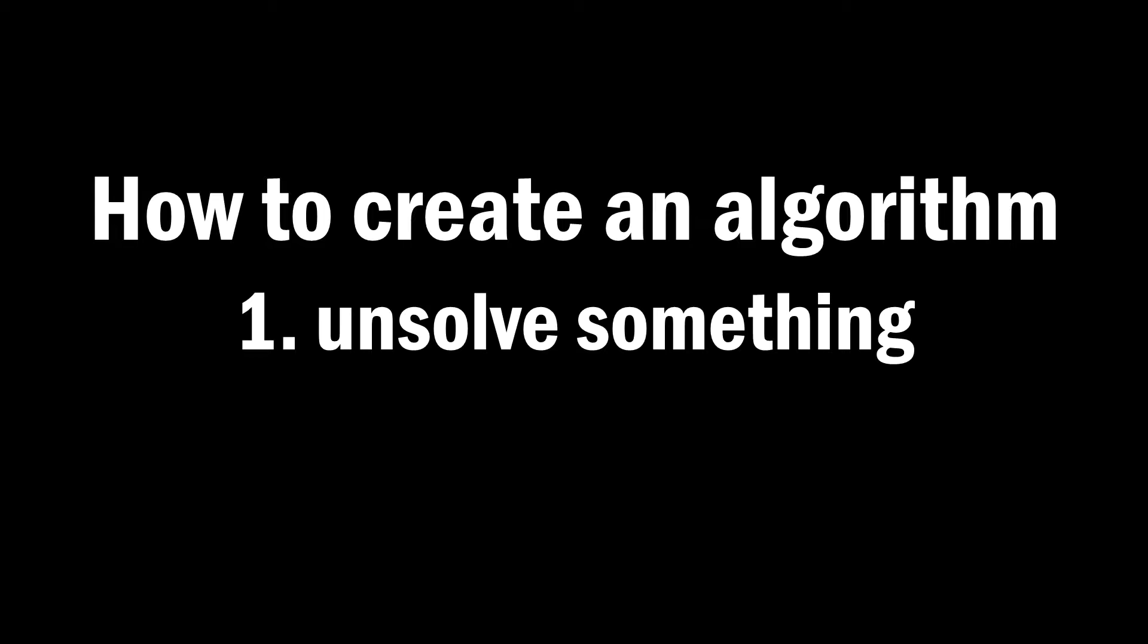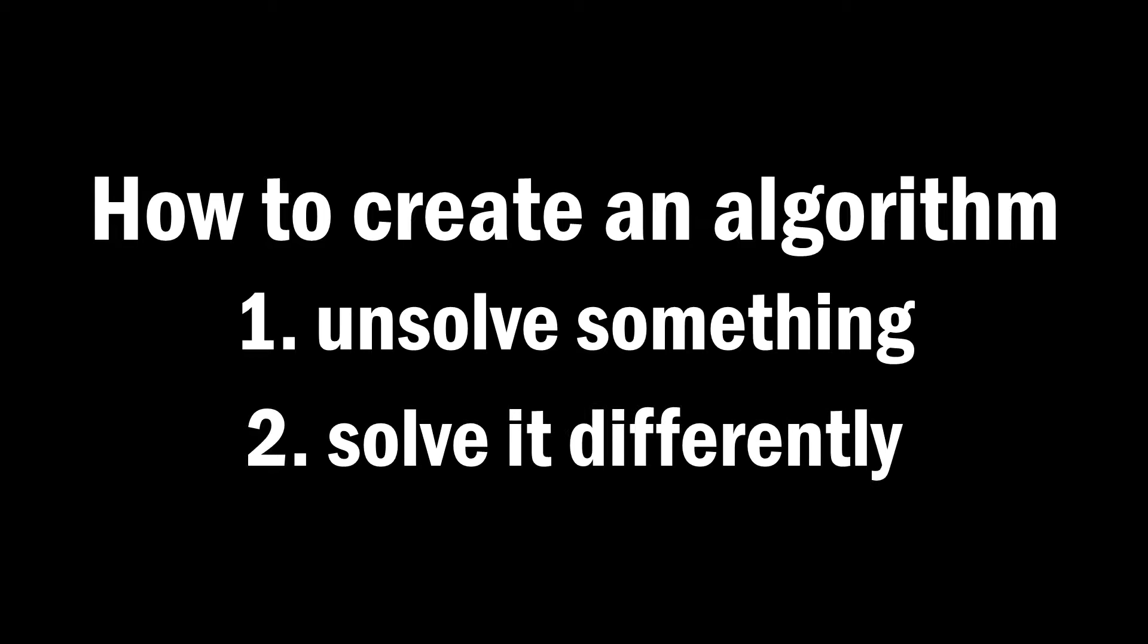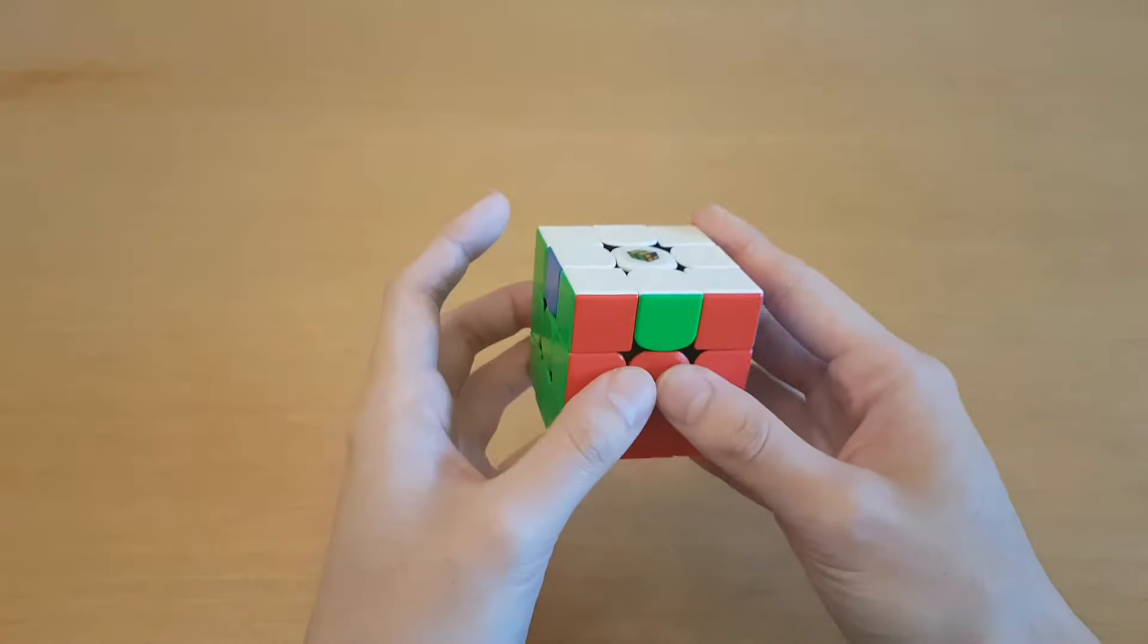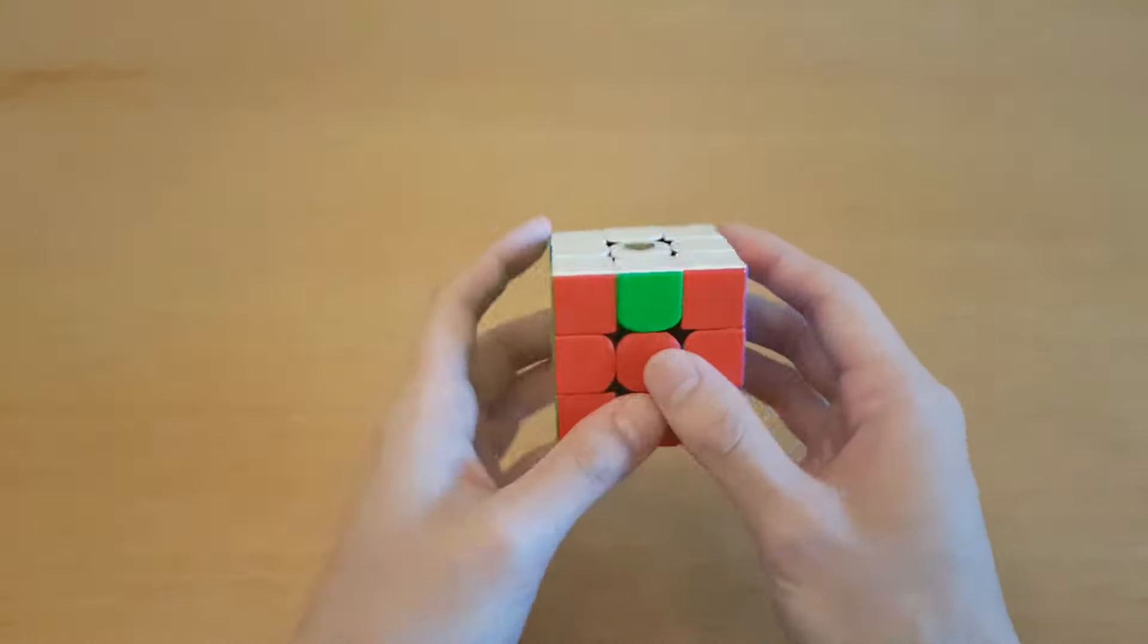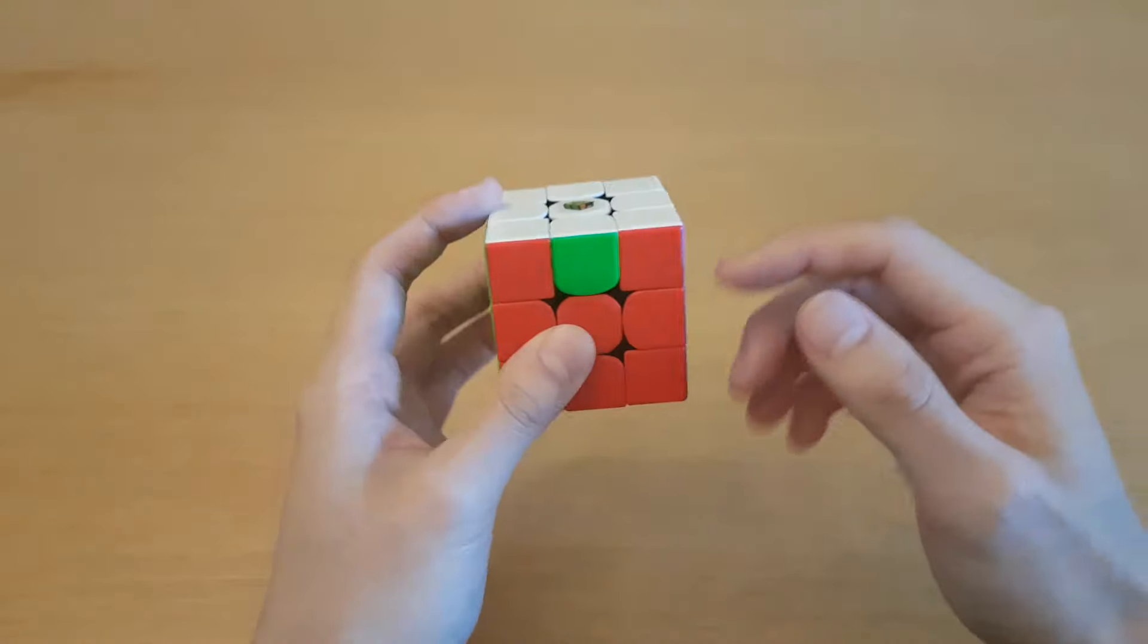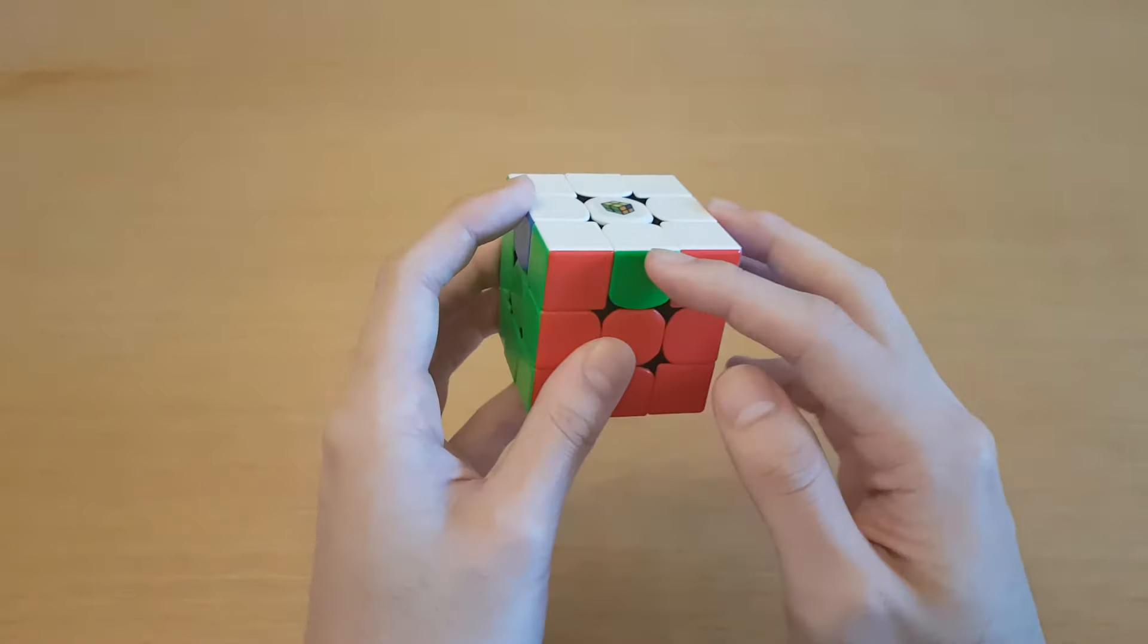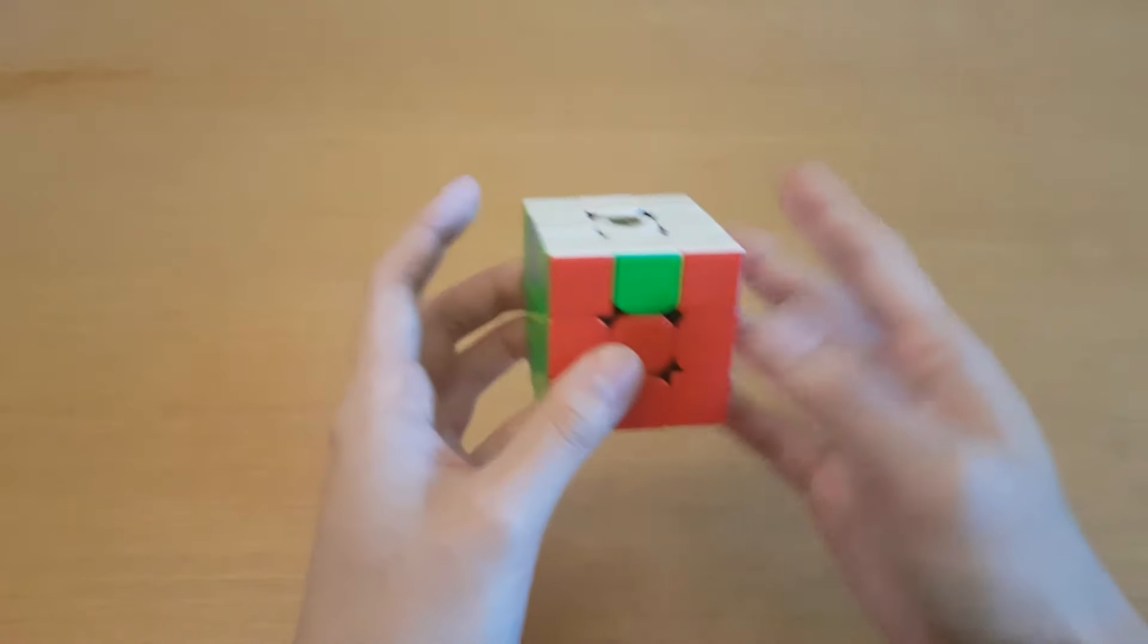First you unsolve something, and then you try to solve it in a different way. Then all you have to do is look at what it did, and hopefully it did something useful. Any sequence of moves technically counts as an algorithm, but what makes an algorithm useful is it only moves around a few pieces, because you're using it during a step where hopefully you've solved a lot just by trying to solve it, and the rest is too hard so you use your algorithm to solve the rest.